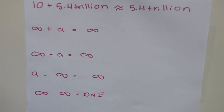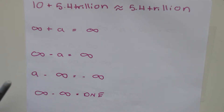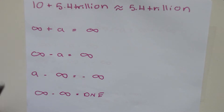In our second case, infinity minus a finite number also equals positive infinity. Like the previous case, positive infinity is so large that subtracting — say, a equals 1000 — would not change anything, and we would still be left with infinity.